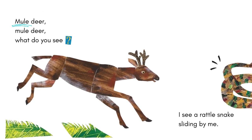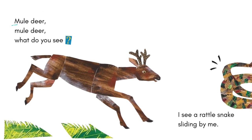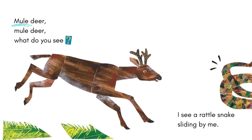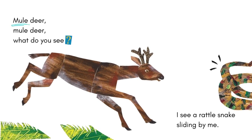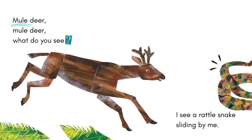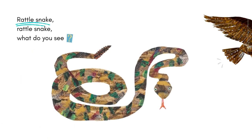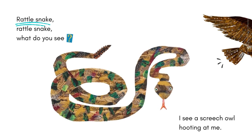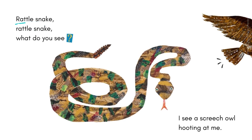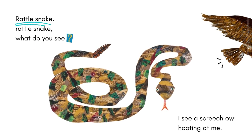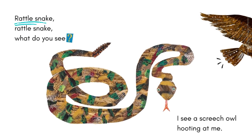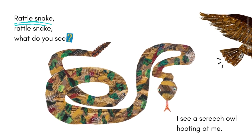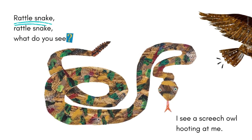Mule deer, mule deer, what do you see? I see a rattlesnake sliding by me. Rattlesnake, rattlesnake, what do you see? I see a screech owl hooting at me.